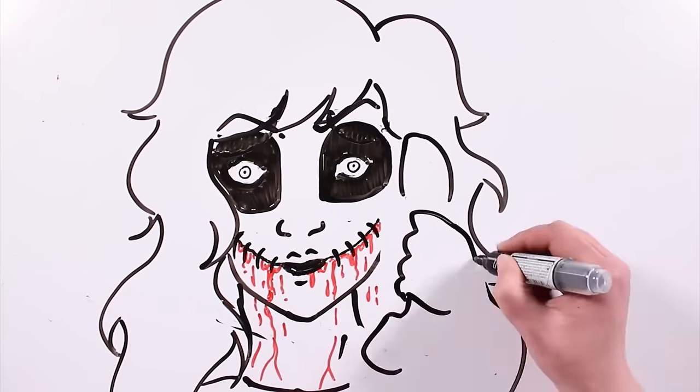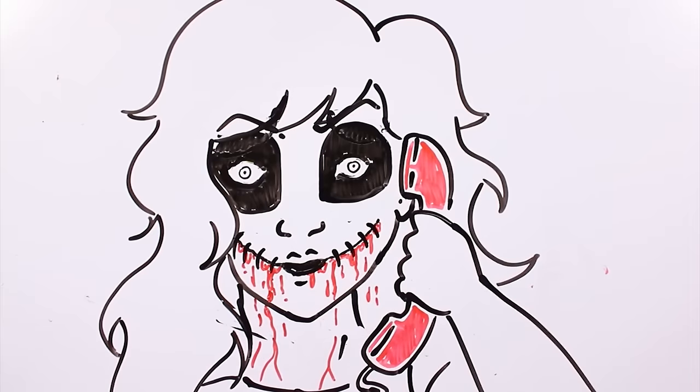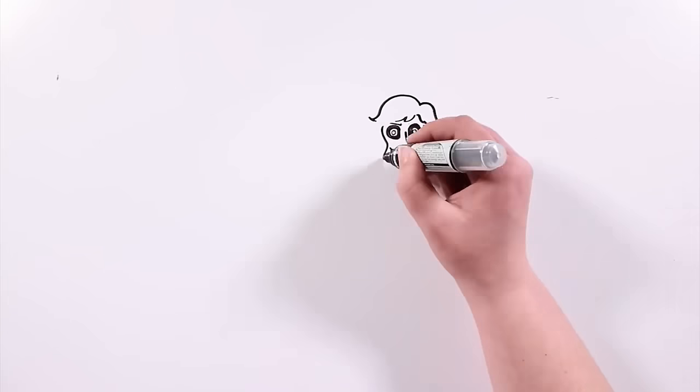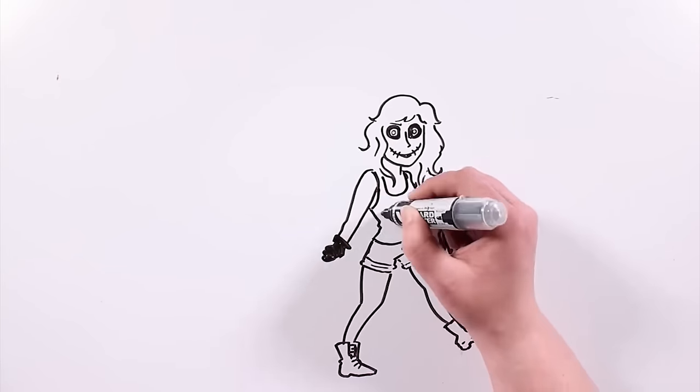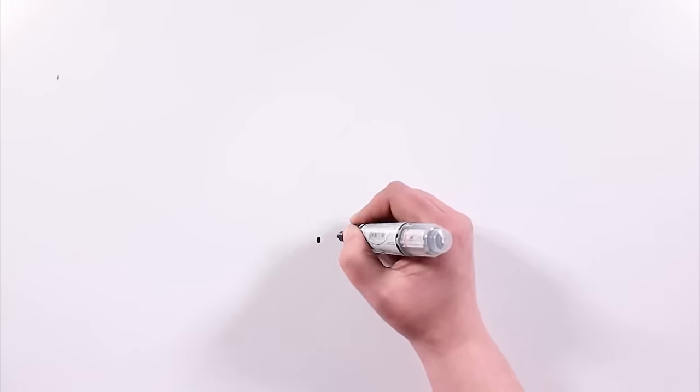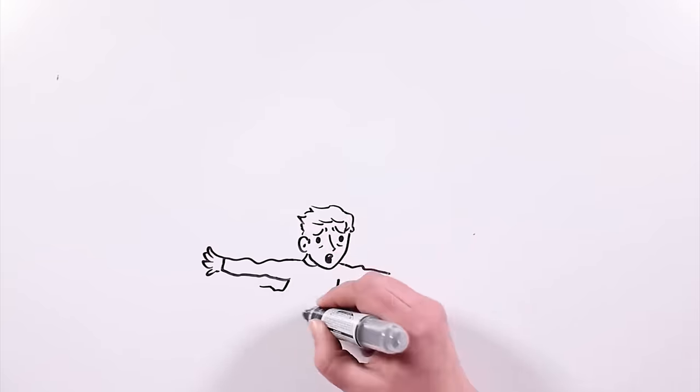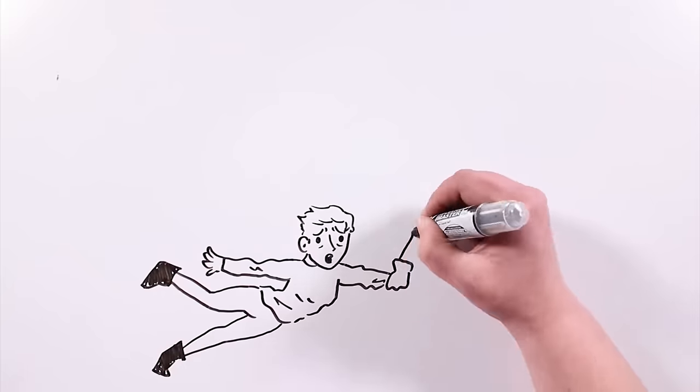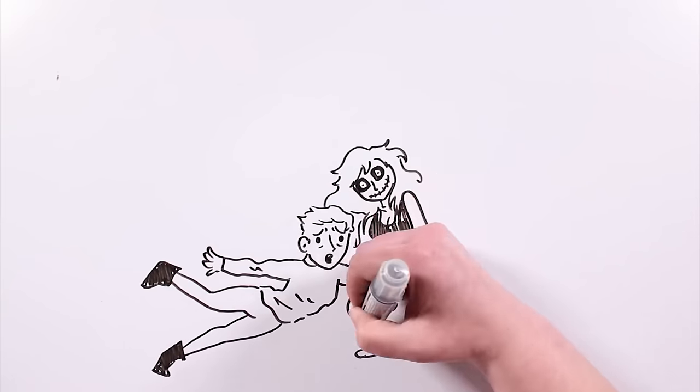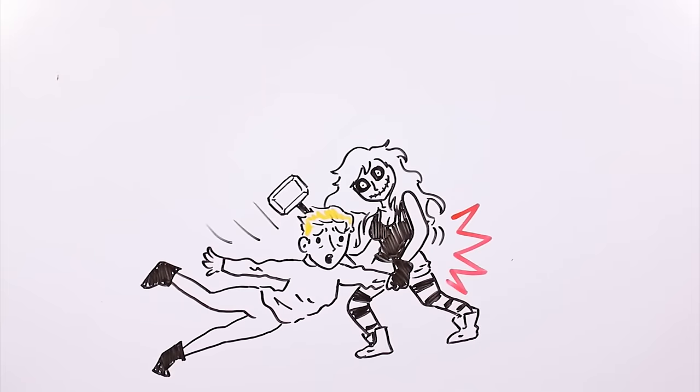The telephone rang and Zero answered imitating Alice's voice. It was Anne who invited her to her house because she had a gift for her. She picked up her hammer and went out the door impatiently, with a psychopathic smile on her face. When Anne opened the door for her, she was shocked. Alice was now a white monster. Scared, she tried to run, but Zero grabbed her arm and threw her to the ground.